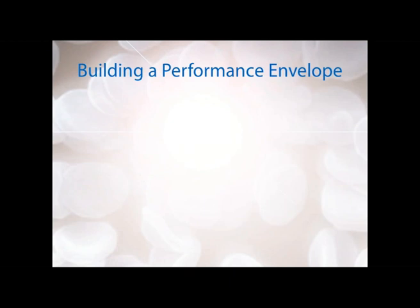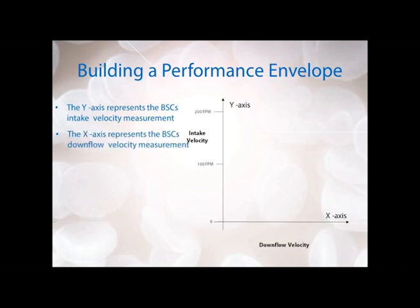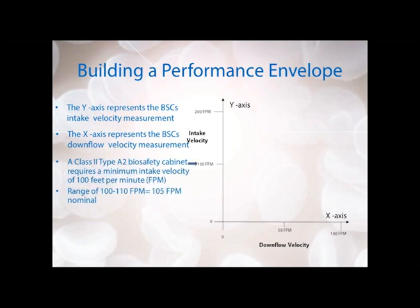We're going to use those two aspects to build our performance envelope. On the y-axis of this graph we'll plot our intake velocity, and on the x-axis we'll plot the downflow velocity. A Class 2 A2 biosafety cabinet requires a minimum intake velocity of 100 feet per minute, per NSF Standard 49. Due to the restrictions of instrumentation used to measure airflow velocity, there's a variance range of about 5 feet per minute. To ensure you never go below 100 feet per minute, the nominal set point of the intake velocity is often set at 105 feet per minute.